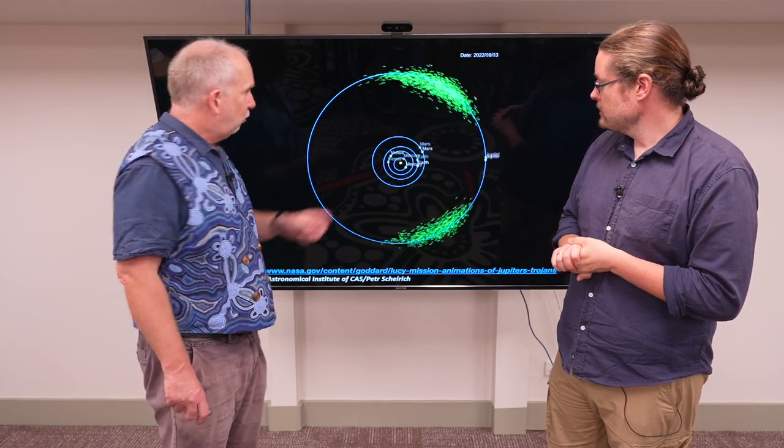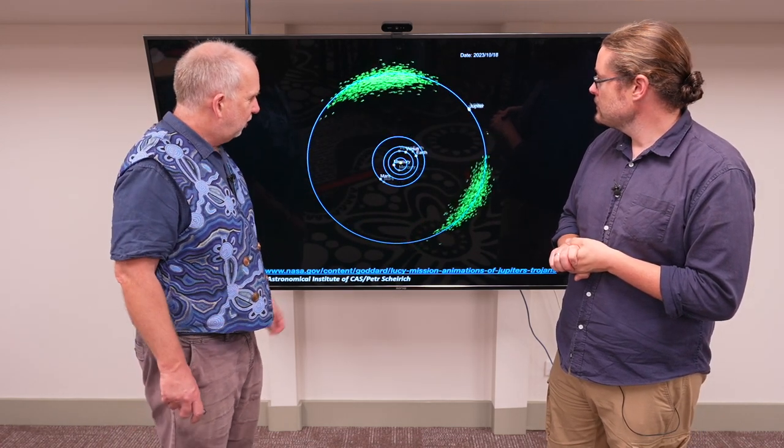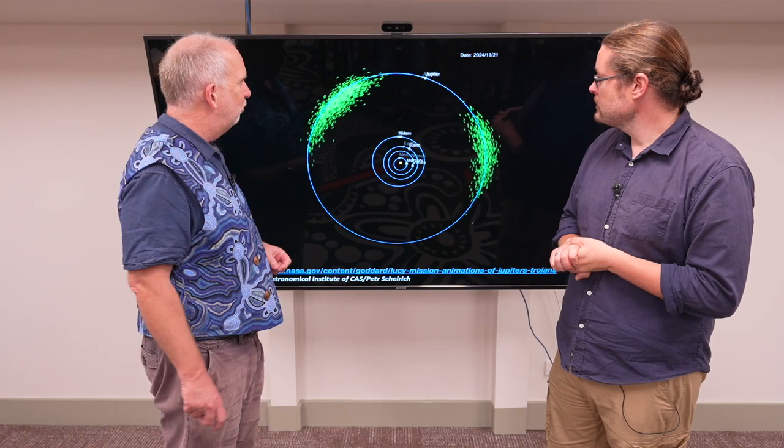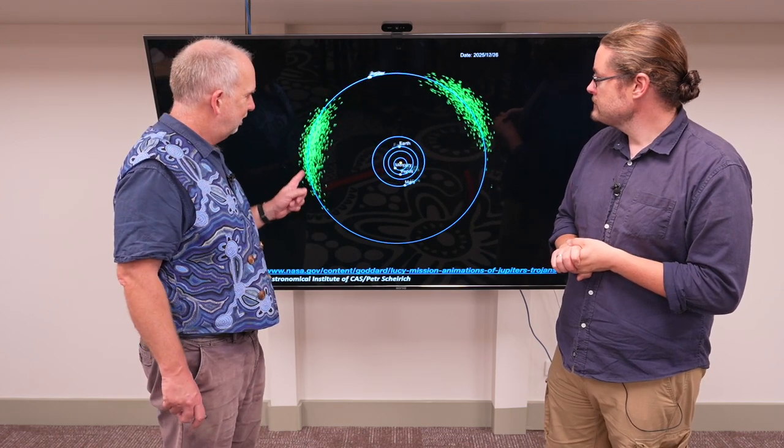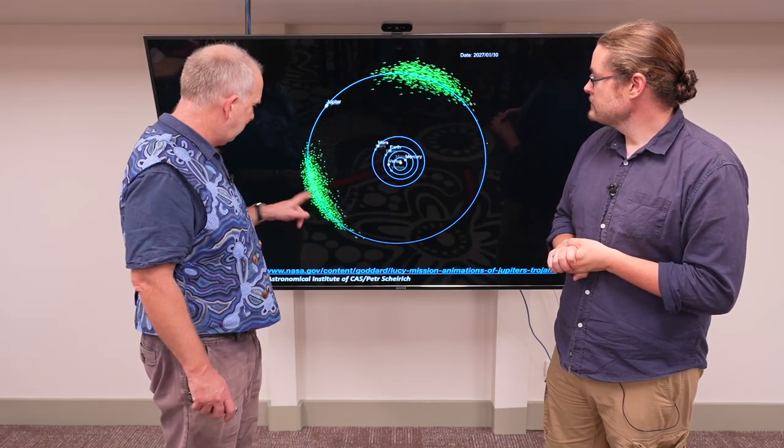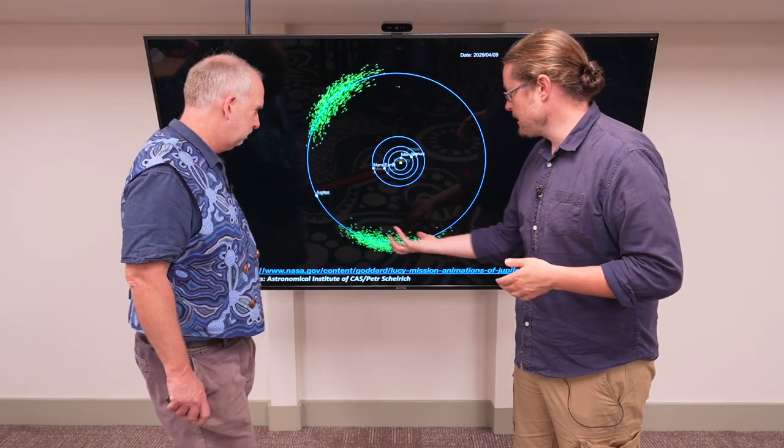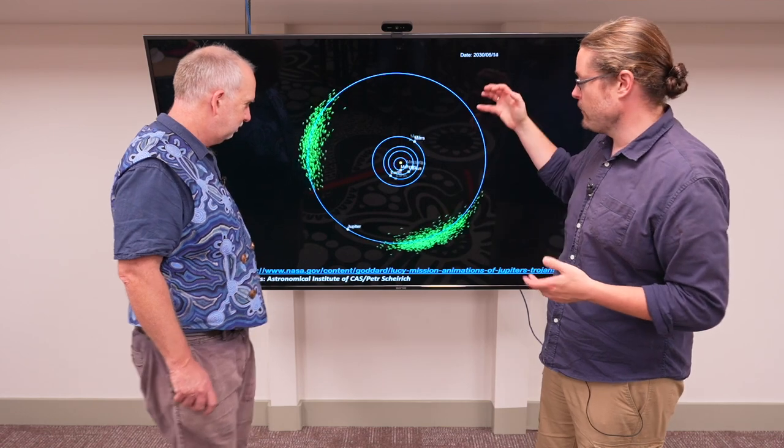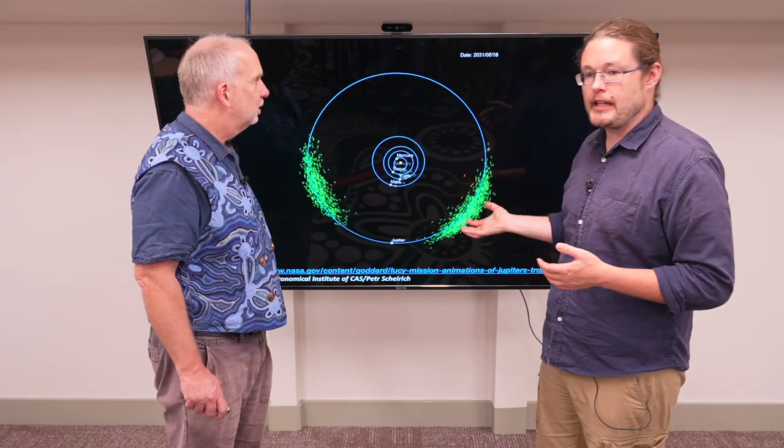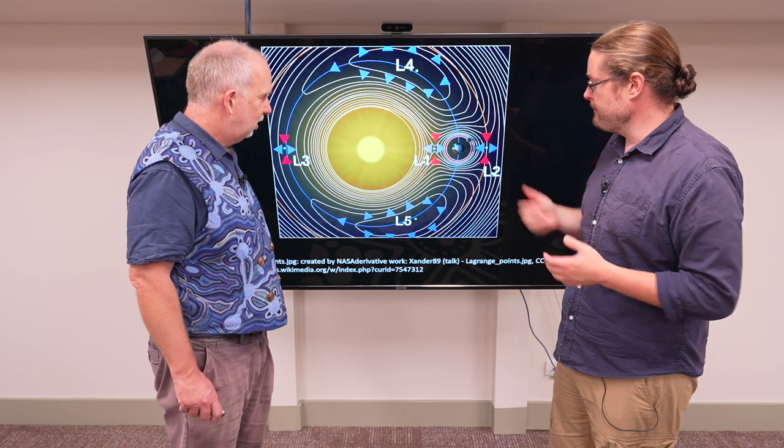The Trojans, for example, they rotate around at the same speed as Jupiter, always staying before and after it, and staying in these irregular clouds. Essentially, they never get closer to Jupiter, they never get further away, they just always stay there. There's a stable orbit. This is called the Lagrange points.